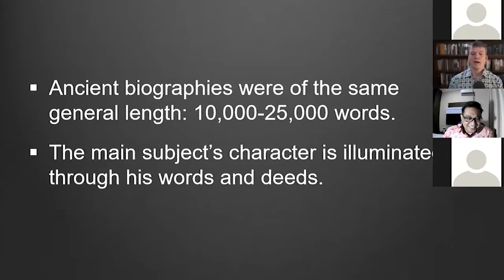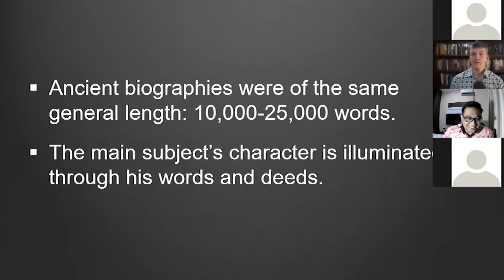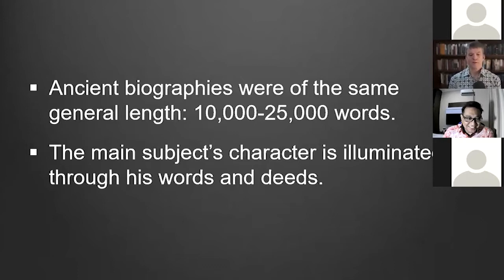Ancient biographies were of the same general length — they tried to fit them on a single scroll, typically somewhere between 10,000 and 25,000 words. For example, in Philo's Life of Moses, written in the first century, there are nearly 31,000 words. The gospels fit into this range as well. Fourth, and very importantly, in ancient biography the objective for writing was so that the main subject's character is illuminated through their words and deeds.